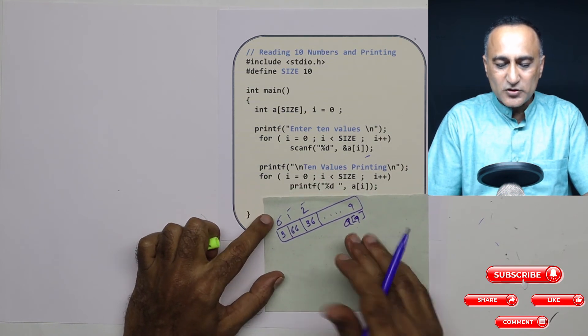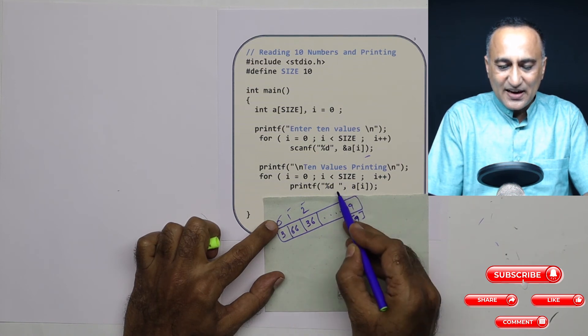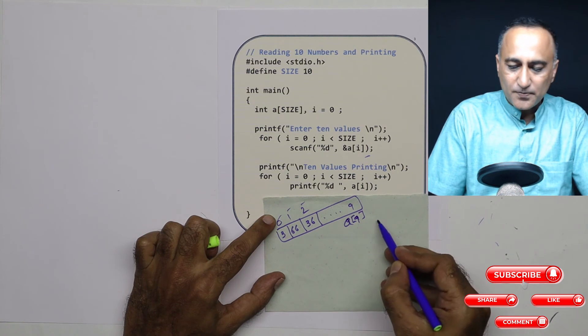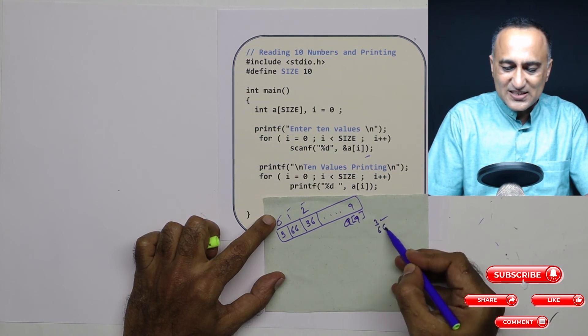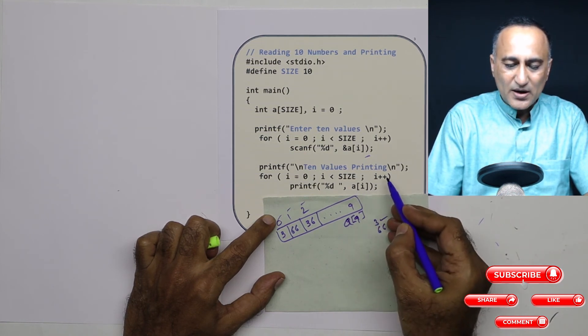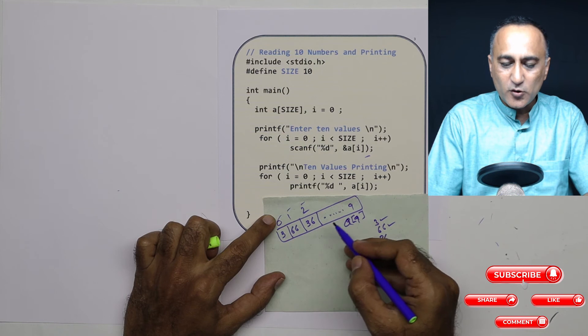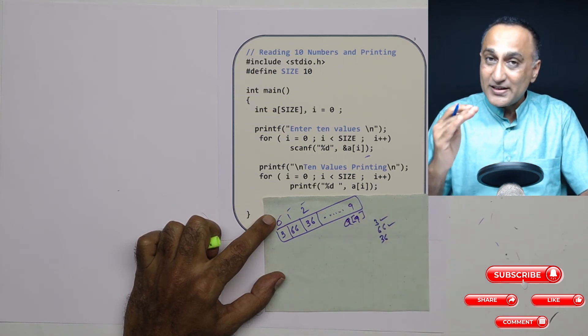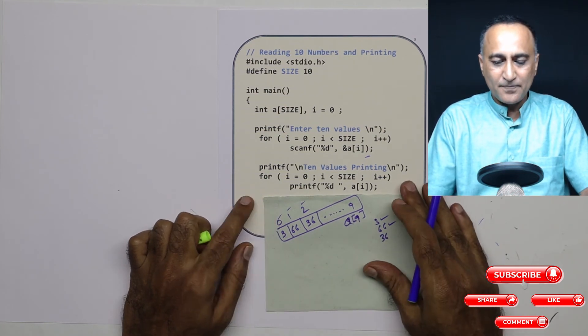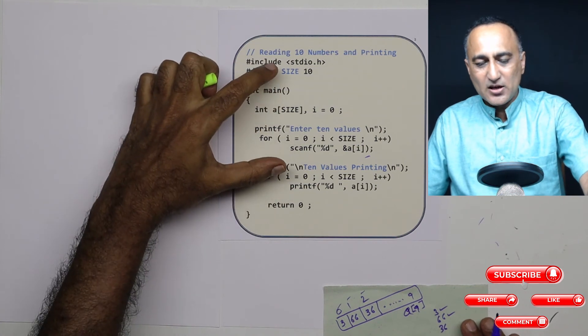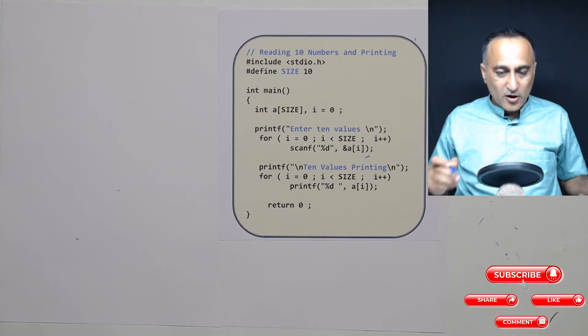Now if I have to print 10 values, I am again going to start with i as zero, i is less than 10. I am printing a of i. When I print a of zero, three is going to be printed on the screen. i becomes one. When I print a of 1, 66 is going to be printed. When I increase i by one, i becomes two, a of two, it's going to print 36. This process is going to continue till all the 10 locations values are printed starting from zero to nine. I hope this clarifies how we read numbers into an array from the keyboard and how do we print numbers from the array on the screen.